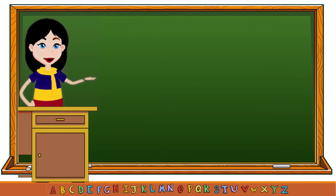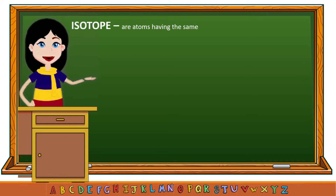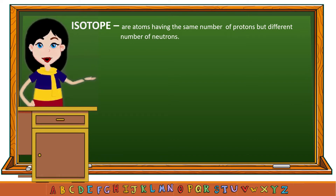While the number of protons is fixed for an atom of an element, the number of neutrons may vary. Atoms having the same number of protons but different number of neutrons are referred to as isotopes. Isotopes are identified through their mass number, which is the sum of the number of protons and the number of neutrons in an atom.